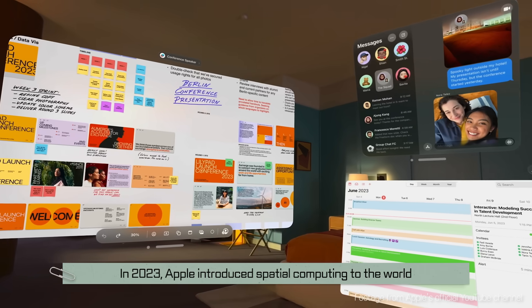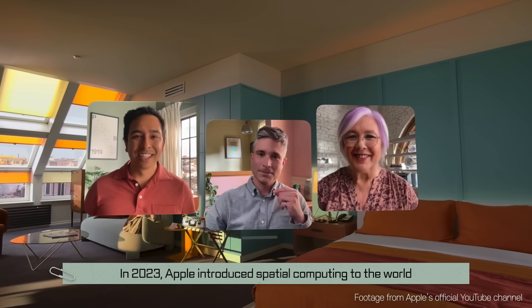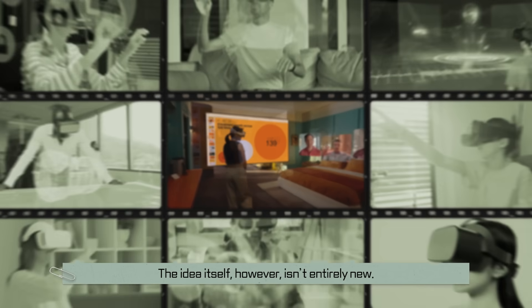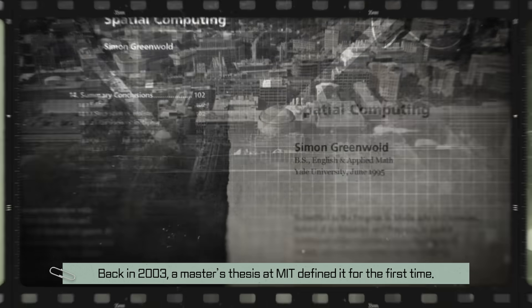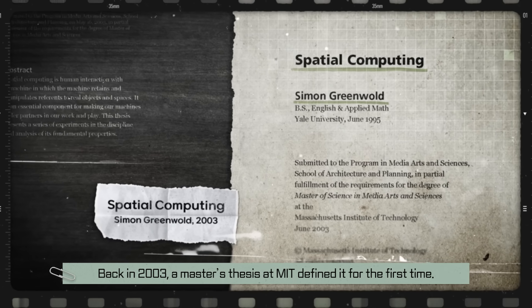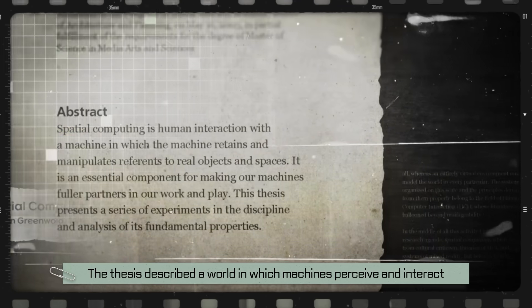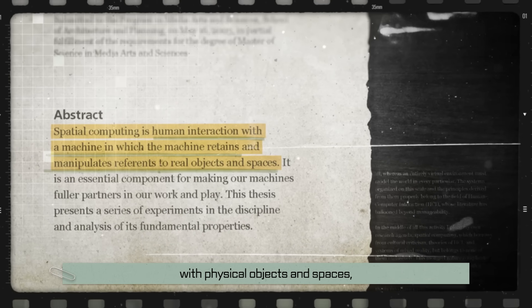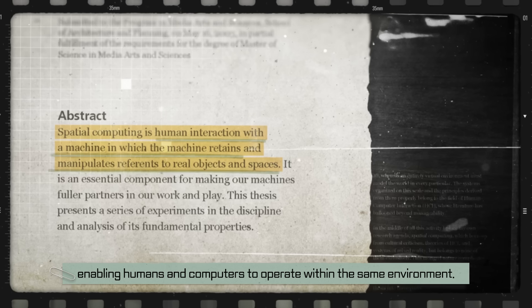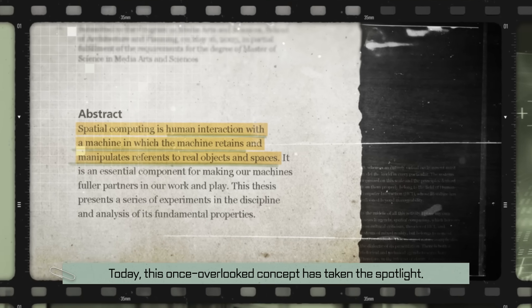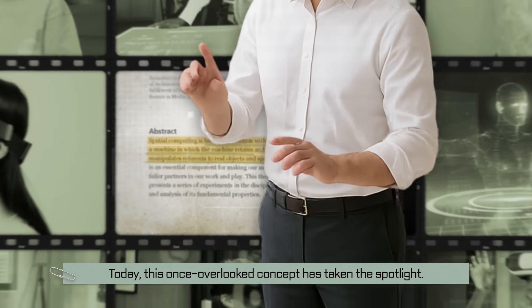In 2023, Apple introduced spatial computing to the world through the launch of Vision Pro. The idea itself, however, isn't entirely new. Back in 2003, a master's thesis at MIT defined it for the first time. The thesis described a world in which machines perceive and interact with physical objects and spaces, enabling humans and computers to operate within the same environment. Today, this once-overlooked concept has taken the spotlight.